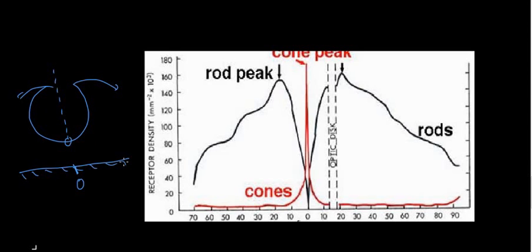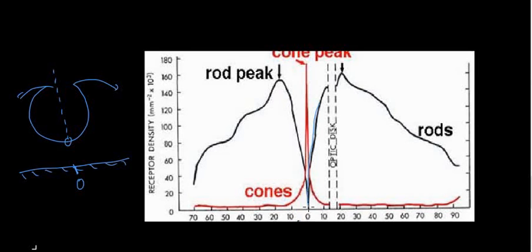The dark line represents the amount of rods, and the red line represents the amount of cones. At the fovea centralis, the dark line is at zero — no rods at all — and the cone line peaks at that point, because there are exclusively cones at the fovea centralis.